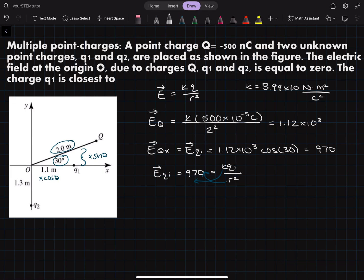So when we write out this equation we have that q1 is equal to 970 times our radius squared divided by k. Since we know our value of k and we know our radius is 1.1 shown inside of the diagram here for q1, we can solve this pretty easily now.